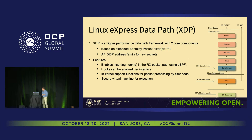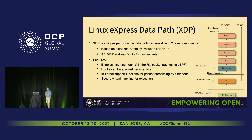XDP gives you control to inspect packets and take action based on user-specified logic rather than having the kernel do everything. You can insert a filter per interface. There are three places to add the filter: generic mode, which sits just below the network stack; native driver mode, which is more performant and intercepts packets as soon as they're DMA'd at the driver level; and XDP offload mode, which is relevant for smart NICs where XDP itself can be offloaded to hardware.